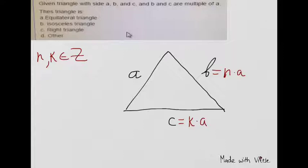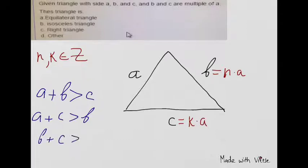In order to solve this problem, we should start with the triangle inequality. We know that for any triangle, the sum of two sides has to be more than the third side. In this case, A plus B has to be more than C, A plus C has to be more than B, and B plus C has to be more than A. These three inequalities have to satisfy our triangle.